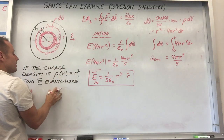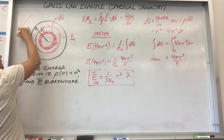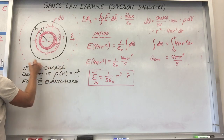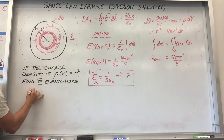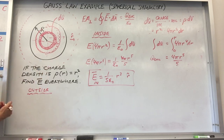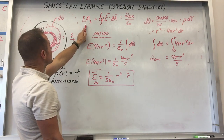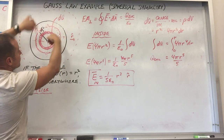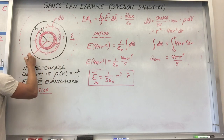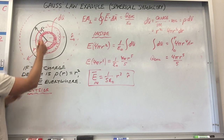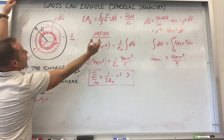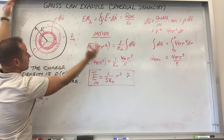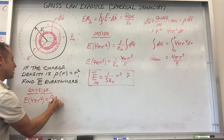For the field outside, place your Gaussian surface outside the ball — you're now in the other regime. Draw another Gaussian surface out there and rerun Gauss's law. The left side is the same: E times 4πr². On the right side, q-enclosed over ε₀ — but now that you're outside, the amount of charge enclosed does not depend on the size of your Gaussian surface. So it's just q-enc over ε₀, a constant.